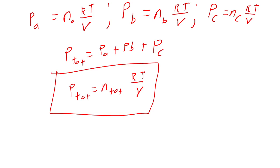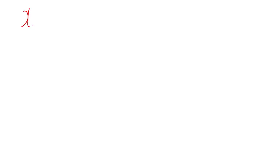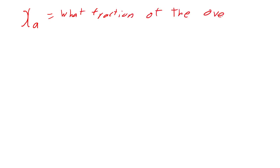There's a second way we sometimes view this equation: a concept called mole fraction. We use the symbol chi (χ). The mole fraction of A tells us what fraction of the overall sample a specific component makes up.